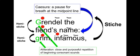You can also see that the line is broken into two pieces — the half lines. That breaking point, which comes right after 'name,' is called a caesura. A caesura is a pause for breath at the midpoint of the line. Remember that everyone is performing this out loud, so they need to be able to take a breath.